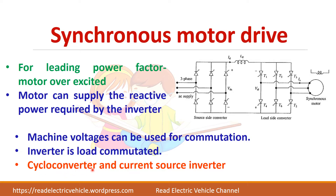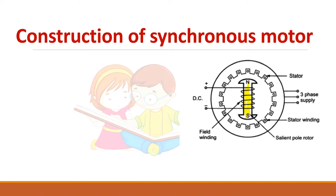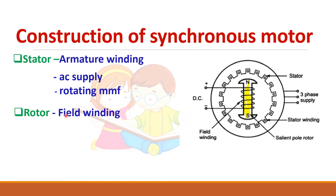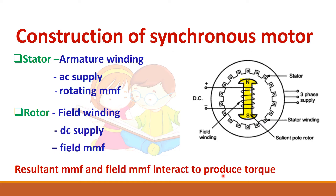Cycloconverters and current source inverters can be used for this purpose. Now let us see the construction of the synchronous motor. Like any other machine, it consists of a stator and rotor. The stator includes the armature winding, to which we give the three-phase AC supply. When three-phase AC supply is given to the three-phase winding, a rotating magnetic field is produced. Since the synchronous motor is not self-starting, we start the machine and bring it to synchronous speed. The rotor has a field winding which is given DC excitation, causing the rotor to lock into the stator field. The interaction of the resultant MMF and the field MMF produces the necessary torque to maintain rotation.